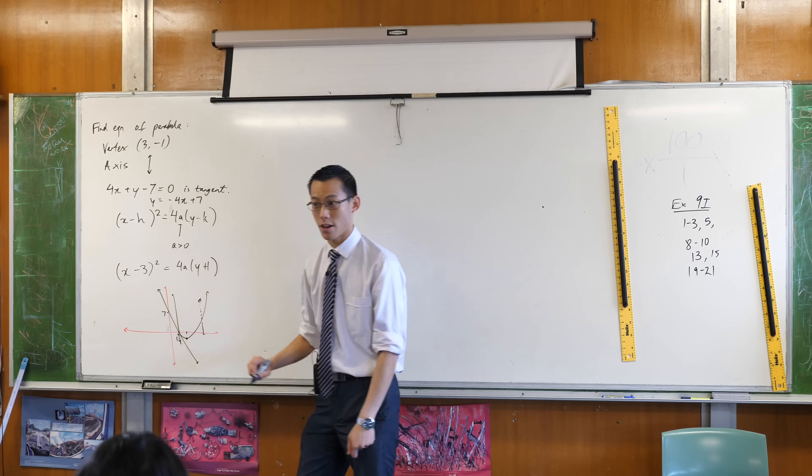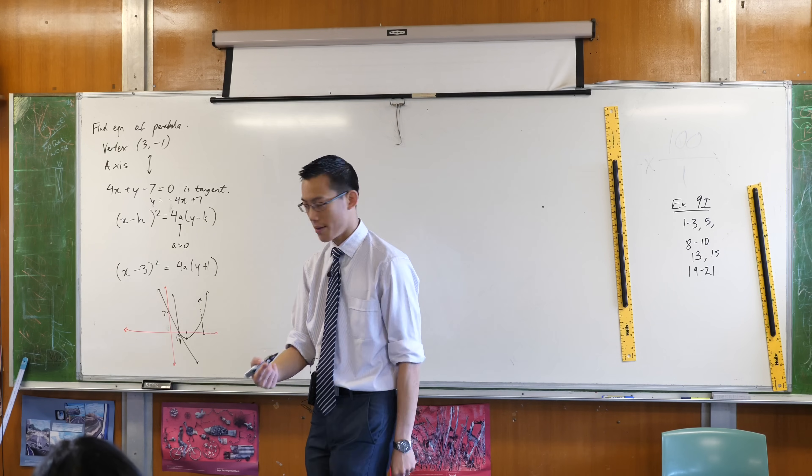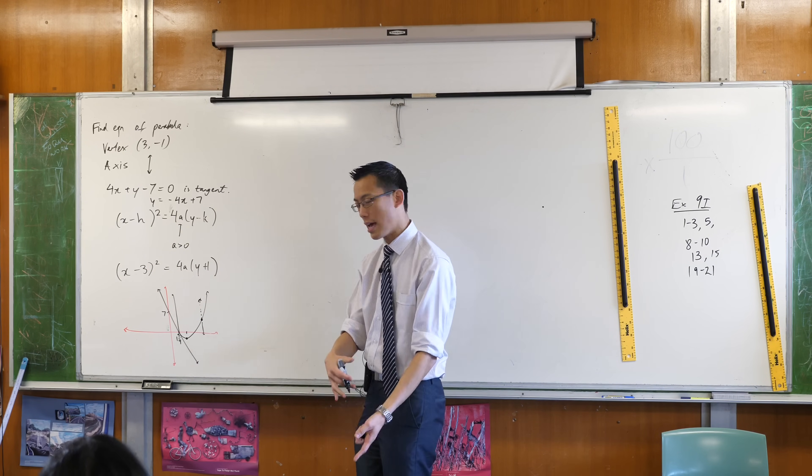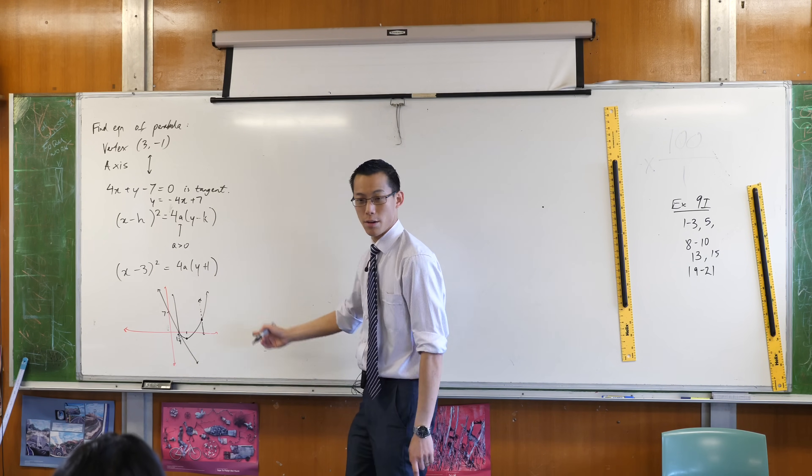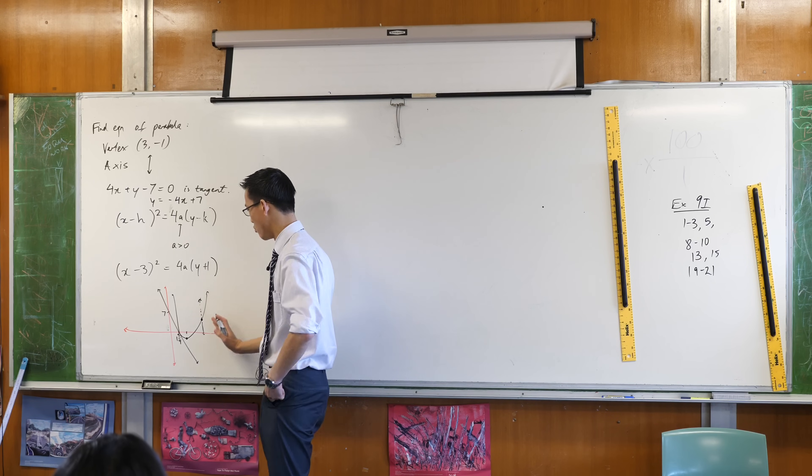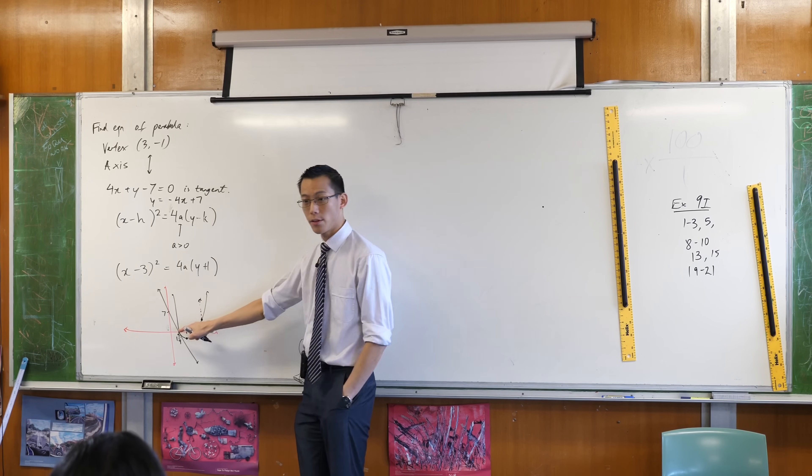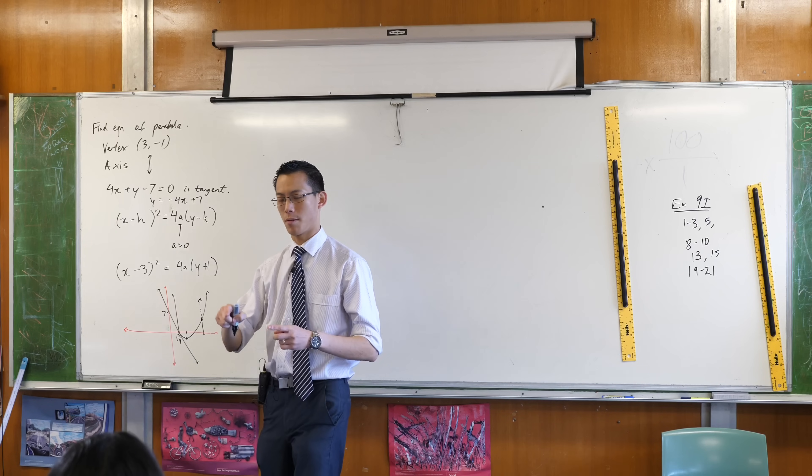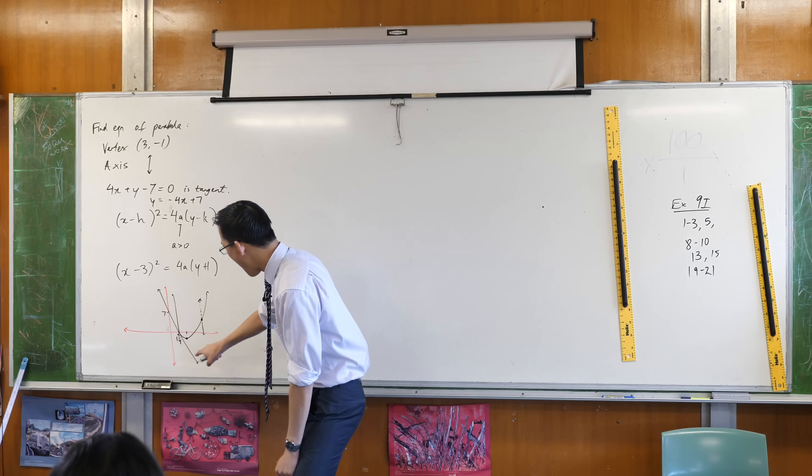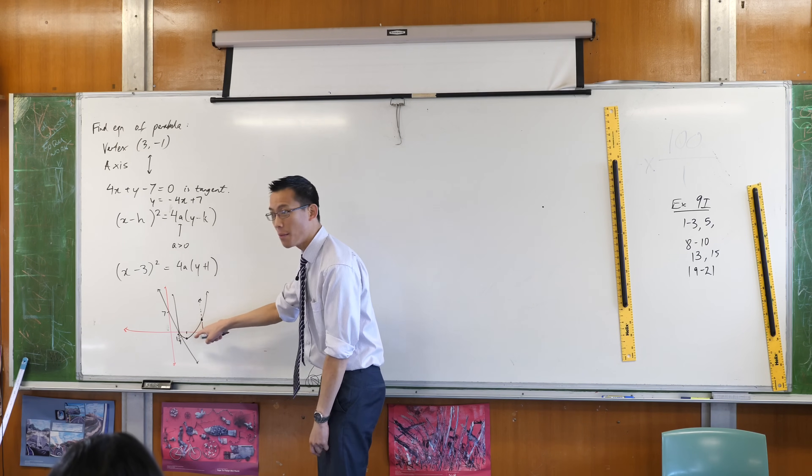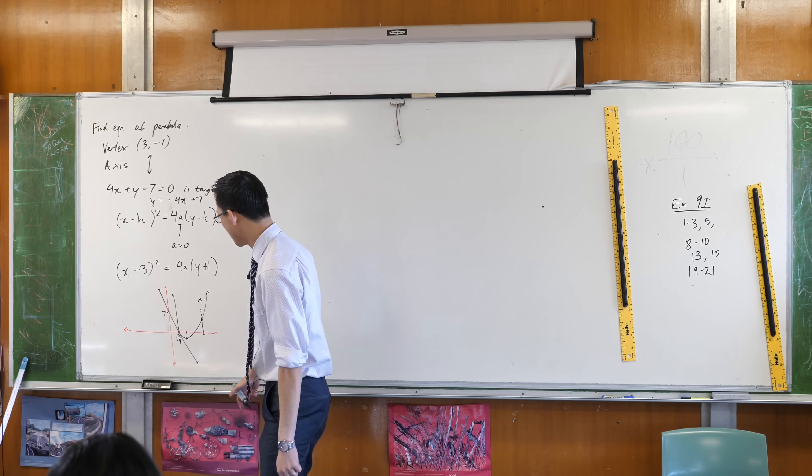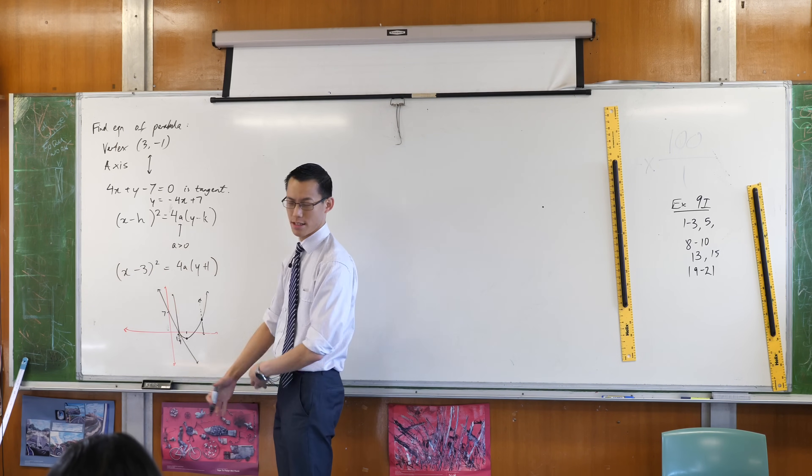See this not tangent, right? Touches just once, but at the spot where it touches, there, the tangent, sorry, the not tangent and the parabola, do you see they're not going in the same direction, right? One's going this way and one's going that way. Whereas when you have a look at the tangent, and this is something I was talking about with the satellite dish and all that kind of thing. At that point right there, the tangent and the parabola might as well be the same line. They share the same gradient.